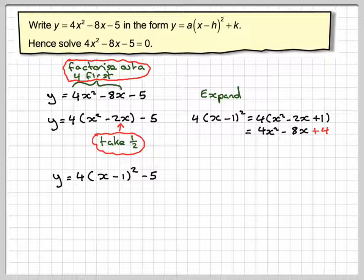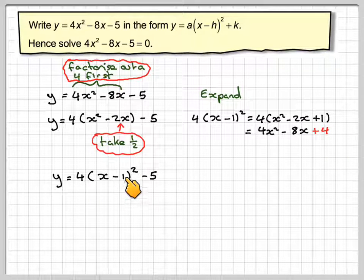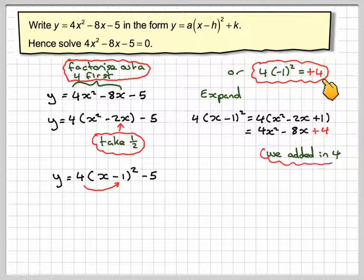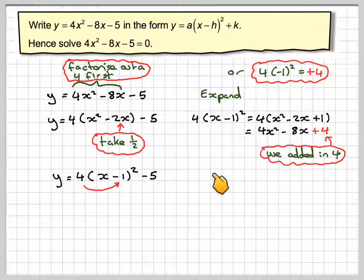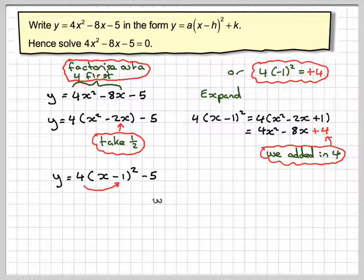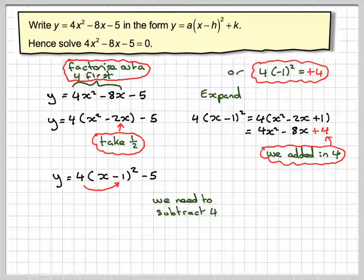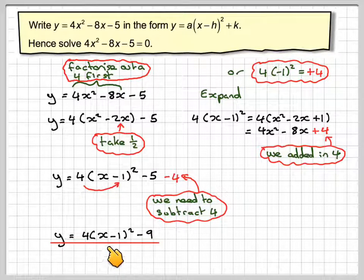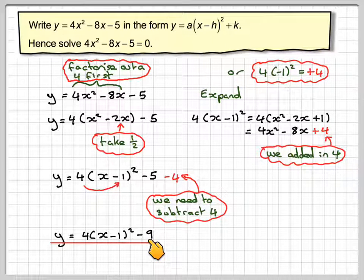Now, another way to work out what you need to add in would be to do 4 times (minus 1) squared, which gives me plus 4. So as I've added 4 over here, I need to subtract 4. So we're going to end up with y equals 4(x minus 1) squared minus 9.